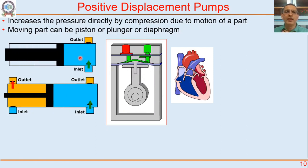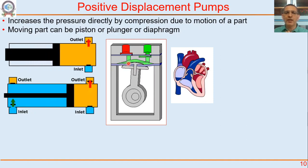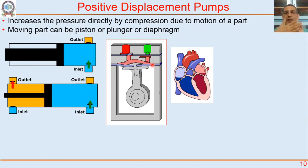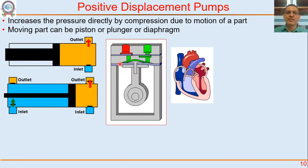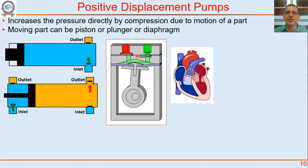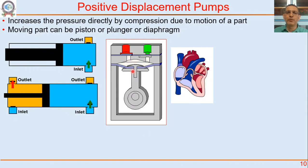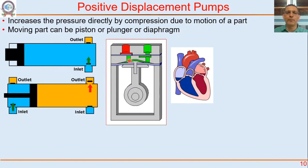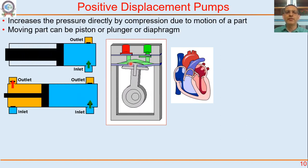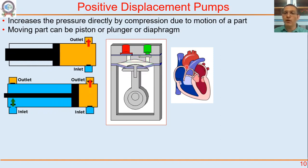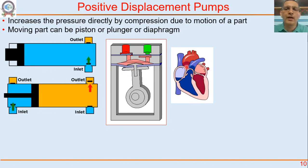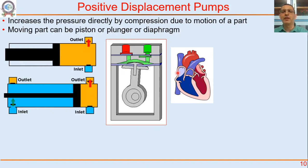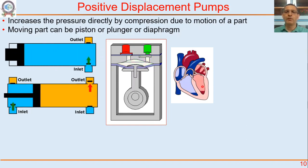Sometimes the piston may not move as a whole but only part of it moves — like a speaker with a vibrating diaphragm. There is a diaphragm: when it moves downwards, suction is developed and liquid comes inside; when it moves upwards, pressure is increased and liquid or gas goes out at high pressure. This is called a diaphragm pump or diaphragm compressor. And all of us carry a positive displacement pump with us all the time — our heart, which is pumping blood inside our body all the time.